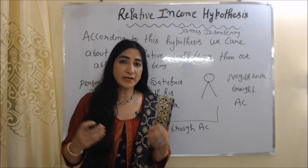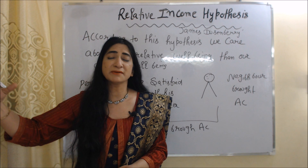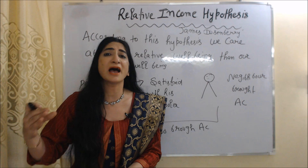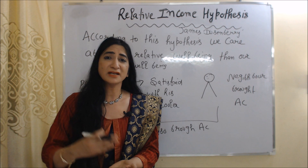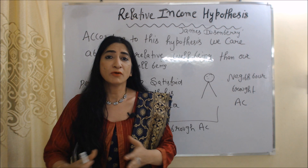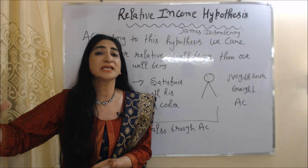Relative income hypothesis was given by James Duesenberry. According to this hypothesis, we care about our relative well-being rather than our absolute well-being. Relative well-being means we compare ourselves with others — we want to maintain our standard of living equal to the people of our society, even if we are not earning equal to them.